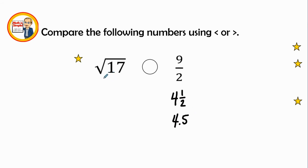So let's go ahead and look at radical 17. Radical 17, we look at the two integers that it falls in between. And we know that radical 16 is a perfect square for 4 and radical 25 is the perfect square for 5.